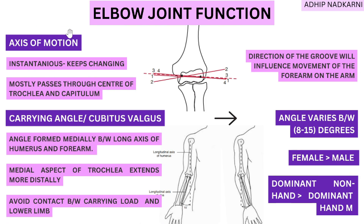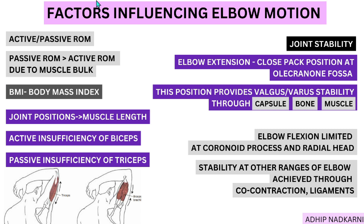To summarize: we covered the instantaneous axis of motion, which changes along with the direction of joint articulation; the carrying angle, which is greater in females and the dominant hand; factors influencing elbow motion including active versus passive ROM, BMI, and other joint positions; and elbow joint stability provided by the capsule, bone, muscles, and ligaments. The next videos will focus on the muscles around the elbow joint — stay tuned. Thank you for watching.